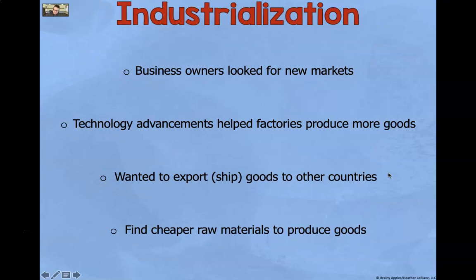Industrialization — business owners started to look for new markets. Technology advancements helped factories produce more goods. They wanted to use their ships to export goods to other countries, making money from those countries. They also wanted to find cheaper raw materials to produce goods.